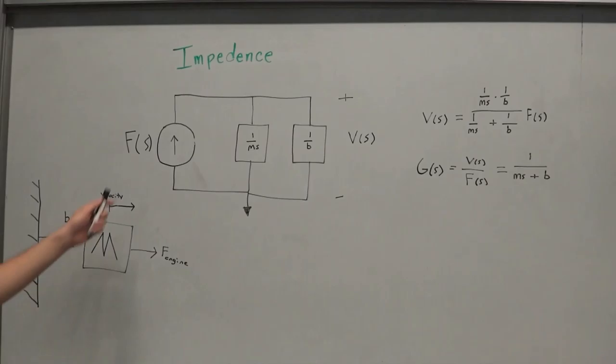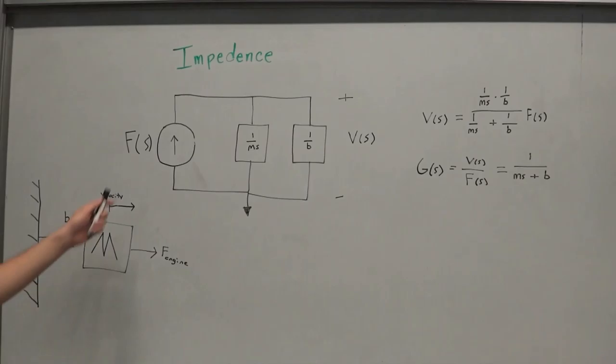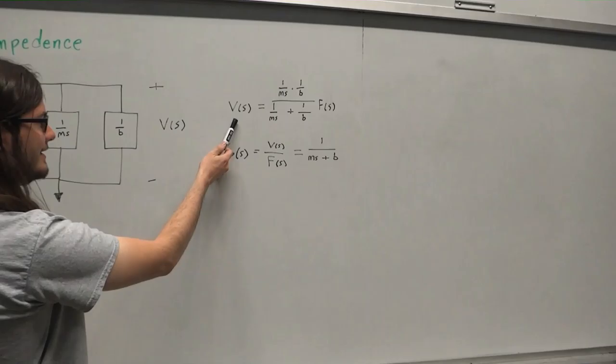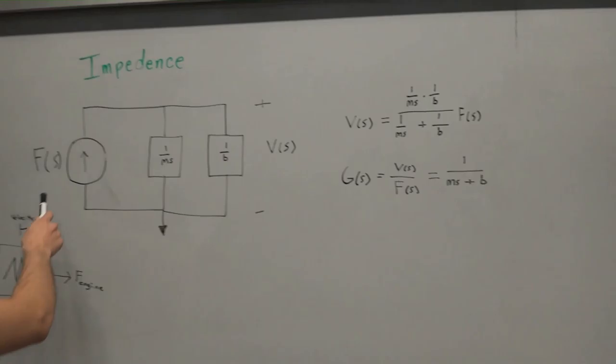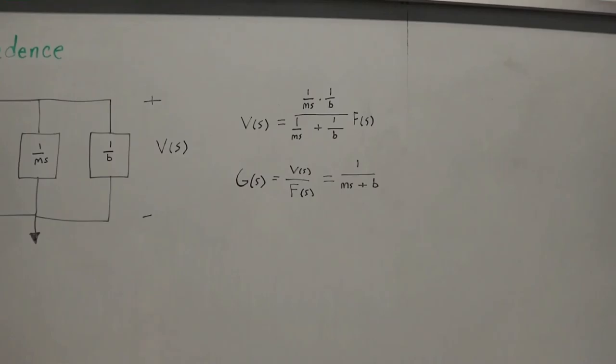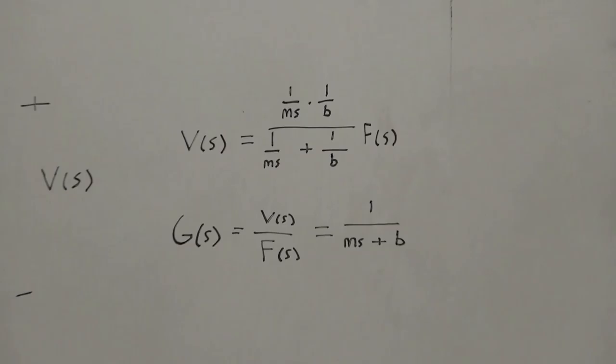So we can take this circuit and try to find V of S. To find V of S, we just take the equivalent resistance of these two impedance blocks and multiply it by our F of S value. And then do a little math simplification and we can find our transfer function. Velocity of S over F of S is equal to 1 over MS plus B. And that's how we get our plant G of S.